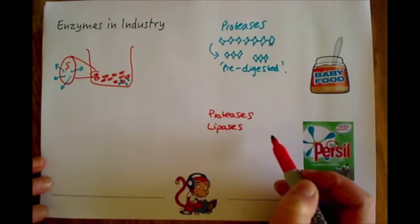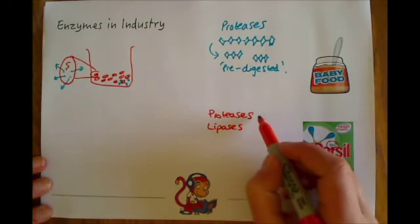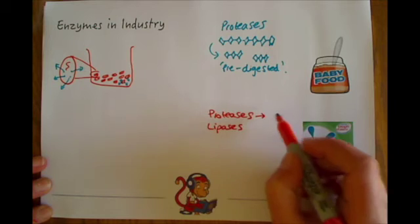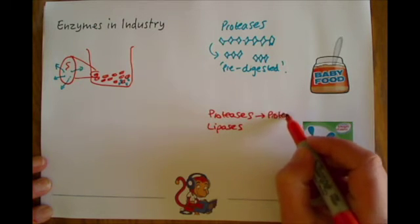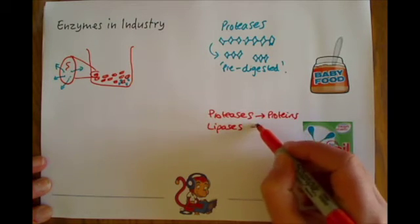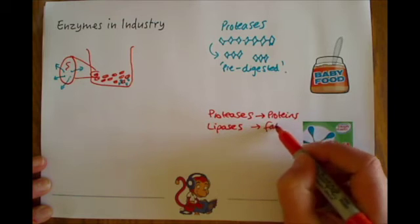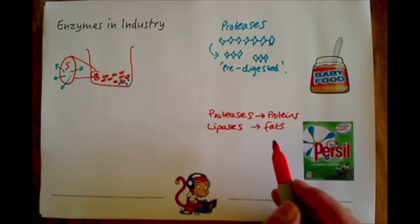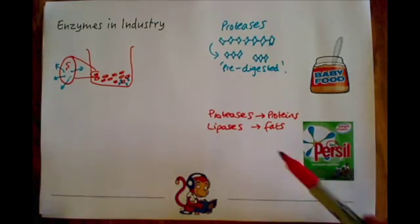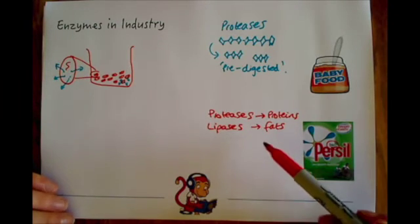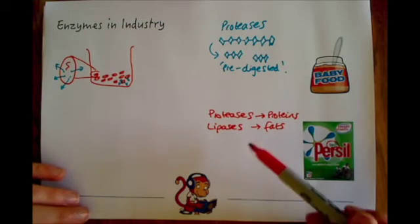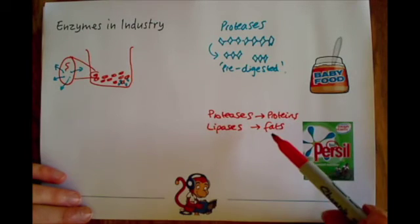If you remember from digestion, the proteases break down proteins and the lipases break down fats. That makes sense if you've got proteins or fats on your clothing, these biological enzymes can go in and help to speed up the breakdown of those substances that are on your clothes.